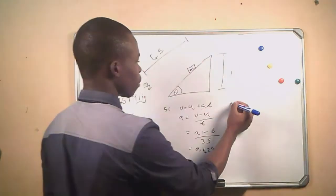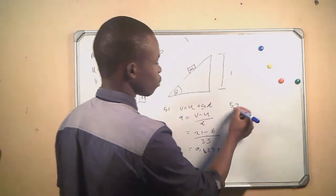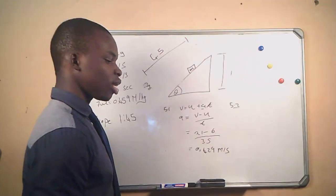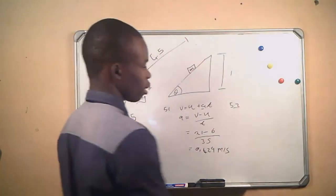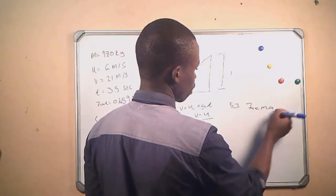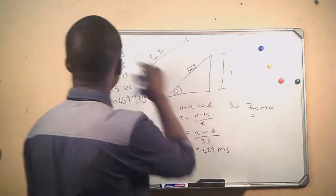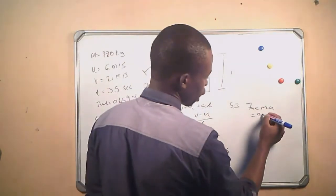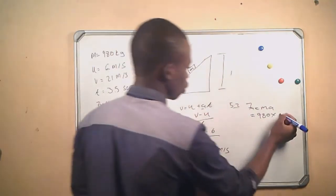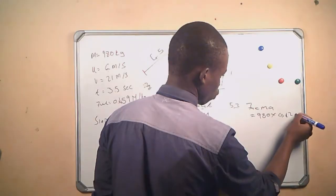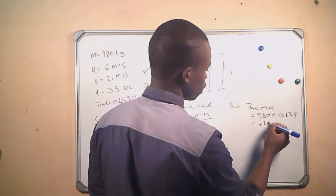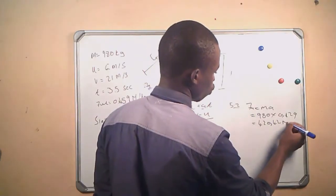Question 5.2: calculate the accelerating force of the vehicle. Fa = ma, which is the mass 980 kg multiplied by the acceleration 0.429, giving us 420.42 newtons. This is our accelerating force.